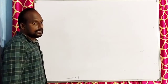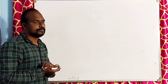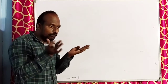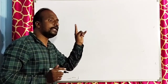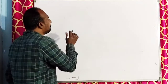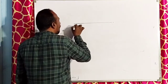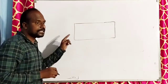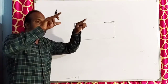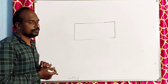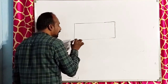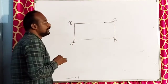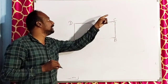Take a drawing board which is covered with white chart. Place the glass slab at the middle of the white chart. Name the vertices A, B, C, D.